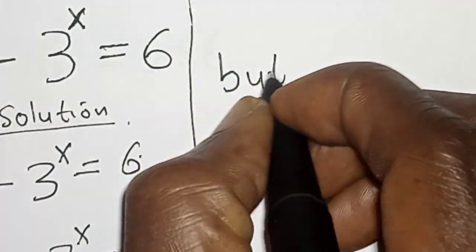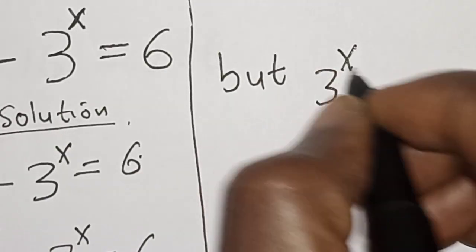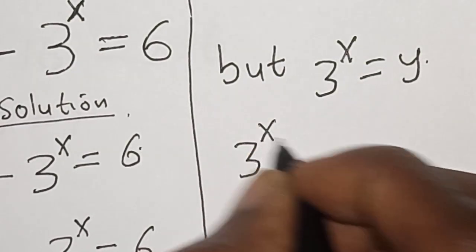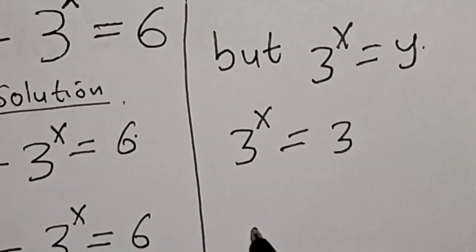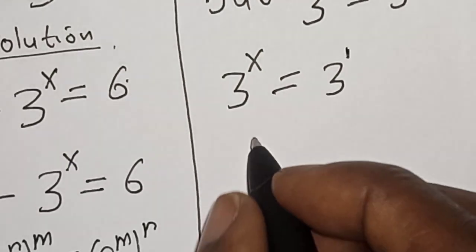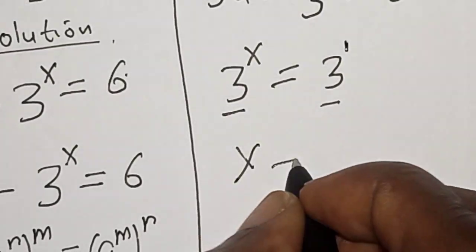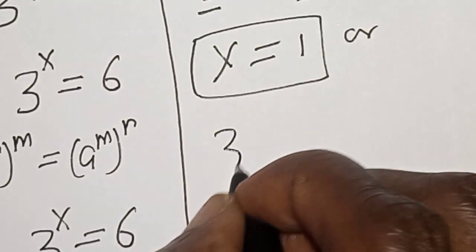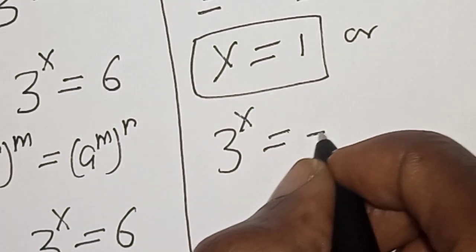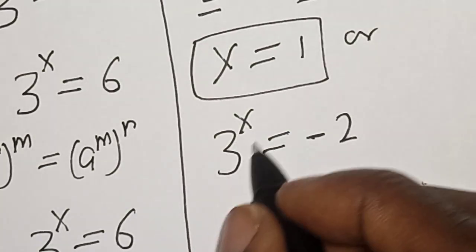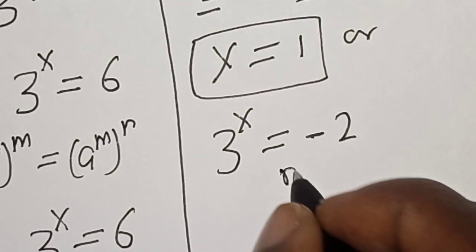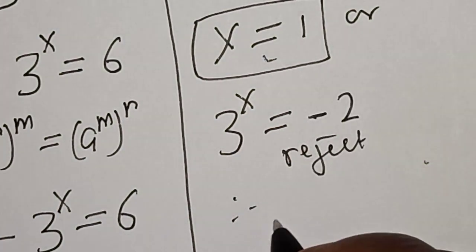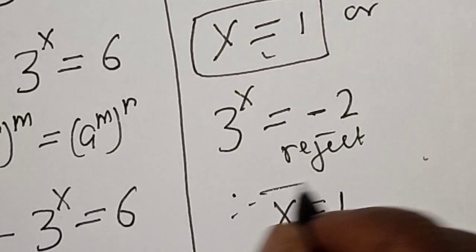Now since 3 raised to power s equals y, and y equals 3, we have 3 raised to power s equals 3 raised to power 1. They have the same base, so s equals 1. For the case where 3 raised to power s equals minus 2: since 3 raised to power s is always positive, we reject this. Therefore the only true solution is s equals 1.